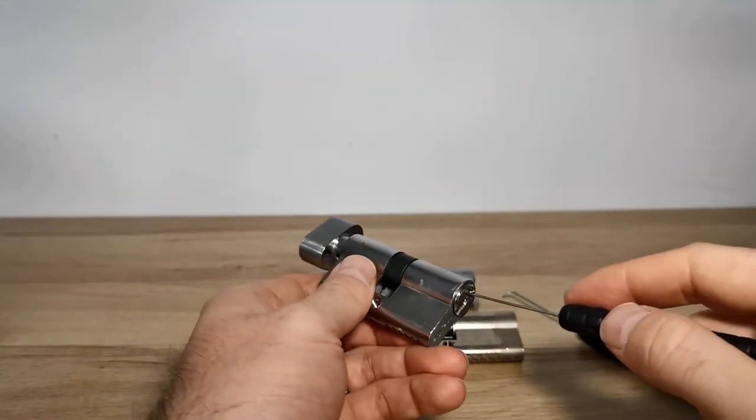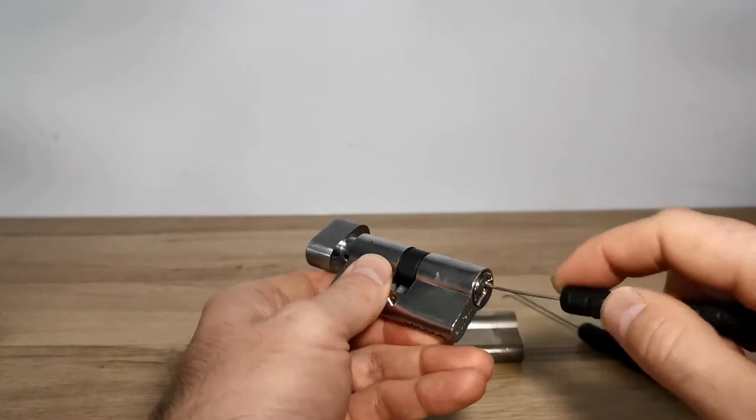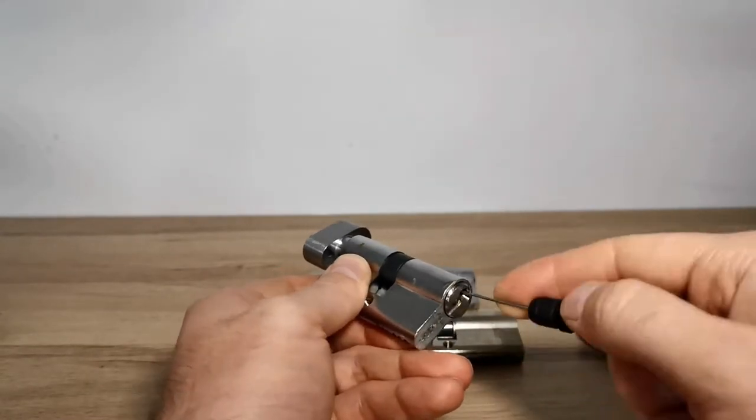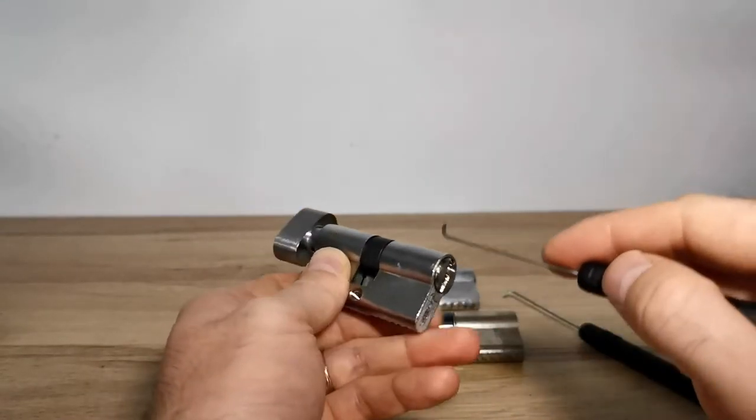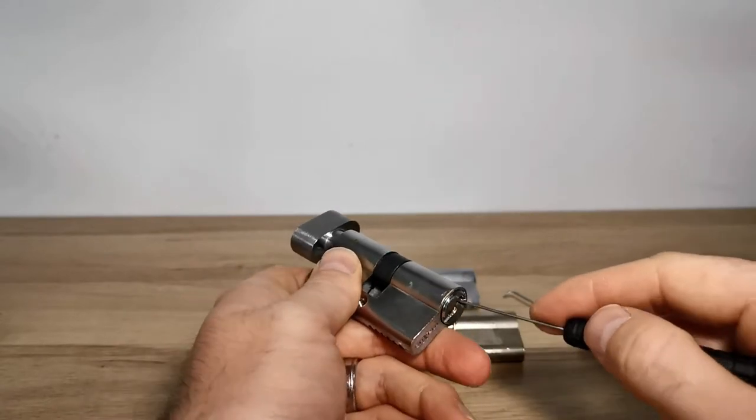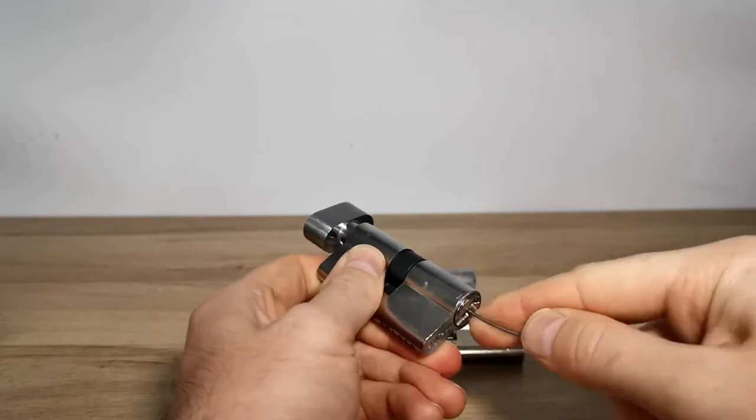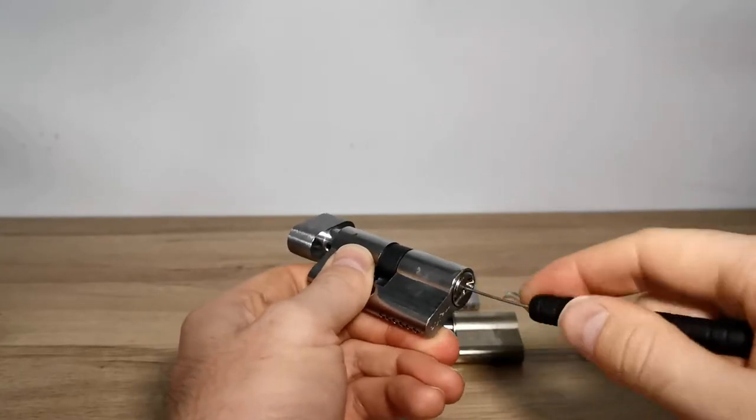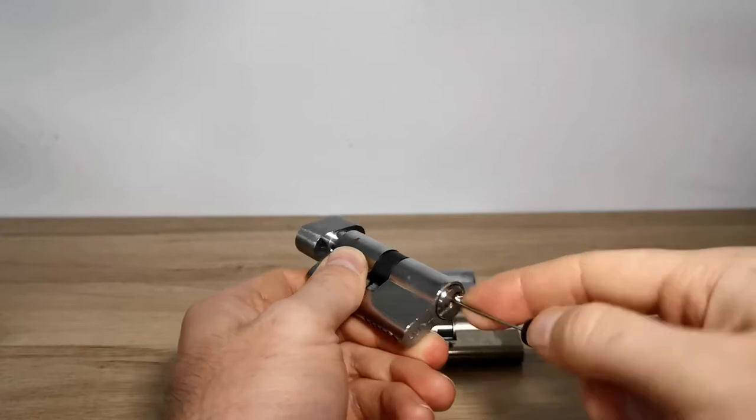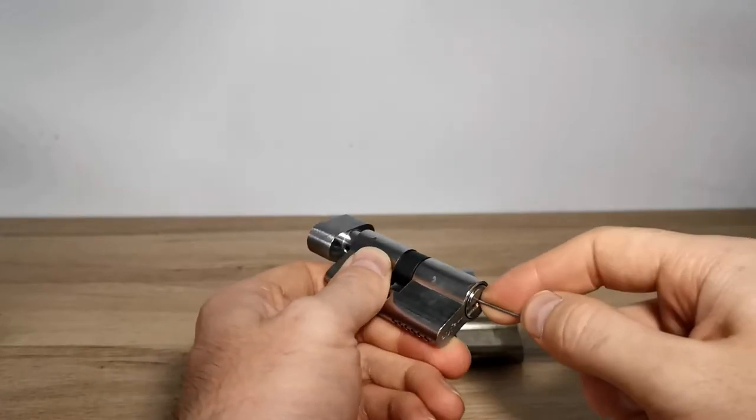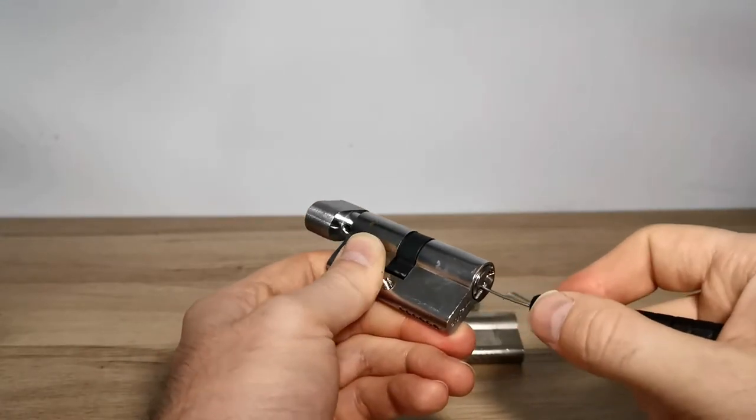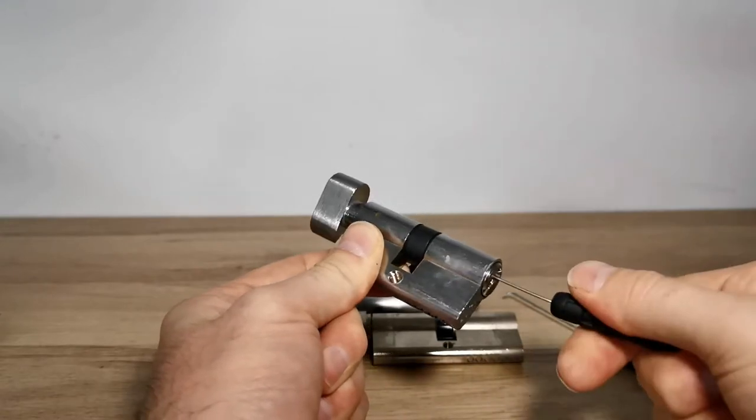So just push the pick all the way to the back of the keyway. You may need to push down the pins as you go, pointing the pick upwards, and as you get to the back, you push slightly down on the pick. There we go. Push slightly down on the pick, and then twist.